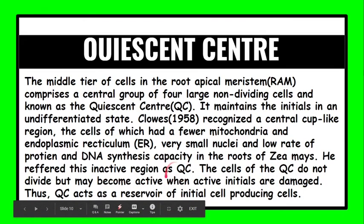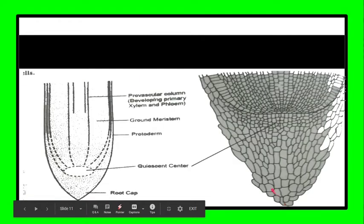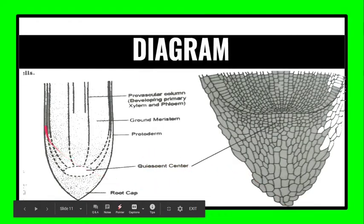They have very small nuclei and low rate of protein and DNA synthesis capacity. In the roots of Zea mays he referred this inactive region as quiescent center. The cells of quiescent center do not divide but may become active when active initials are damaged.